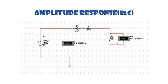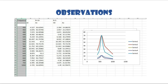Now, the amplitude response — this is the RLC circuit. It is a series connection of R, L, and C with a 17-volt peak supply voltage. These are the observations for it.